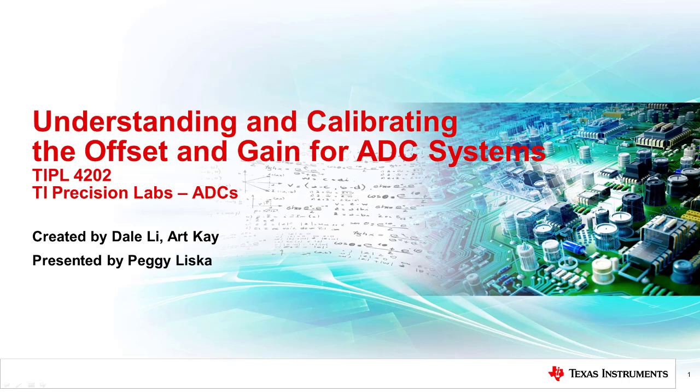Hello, and welcome to the TI Precision Lab covering data converter error sources. Overall, this video will discuss how gain and offset errors can be calculated and eliminated through calibration. We will start by doing an offset and gain error calculation for a data converter system. Next, we will discuss a few methods for calibrating out this error. And finally, we will introduce some different error sources that are difficult to calibrate out.